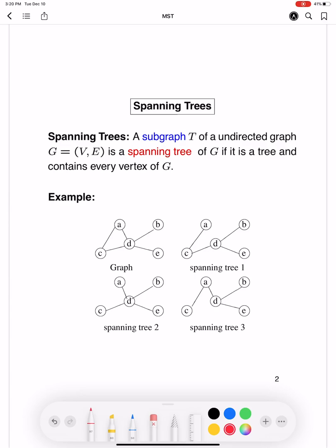A spanning tree is a tree. So it's a subgraph of an undirected graph G and it contains or spans each and every vertex in G. So let's consider this graph here.